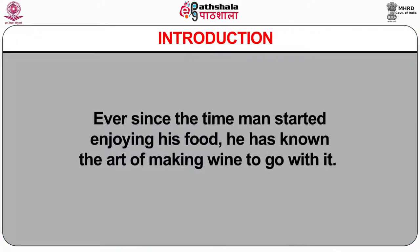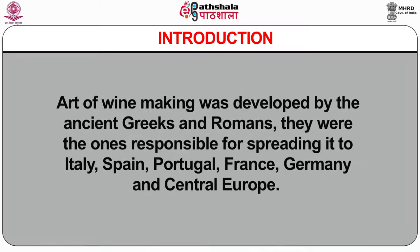The practice of drinking wine for pleasure is centuries old, dating at least as far back as ancient Egypt. Wine is mentioned in documents 3000 years old, as well as in the Bible and the literature of Greeks and Romans. Wine making goes as far back into history as the act of cooking food. Art of wine making was developed by the ancient Greeks and Romans, who were responsible for spreading it to Italy, Spain, Portugal, France, Germany and Central Europe.